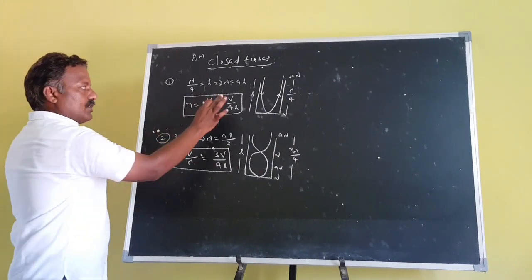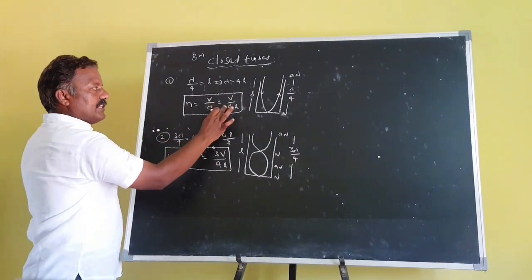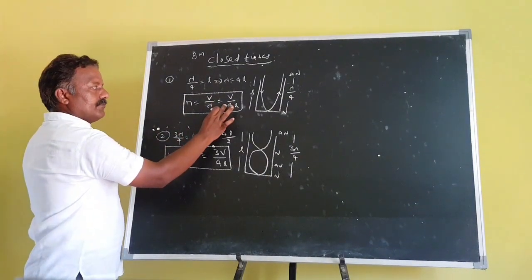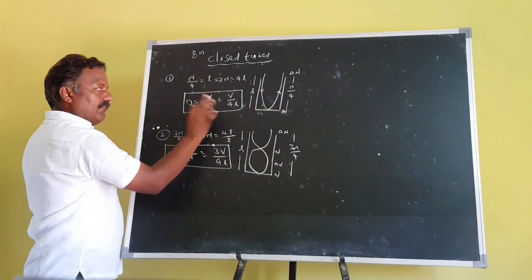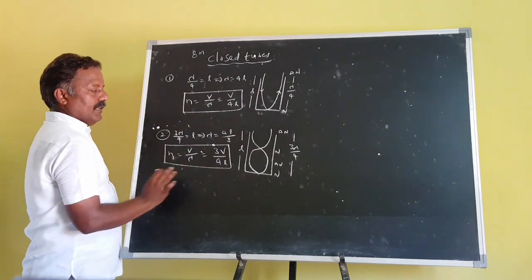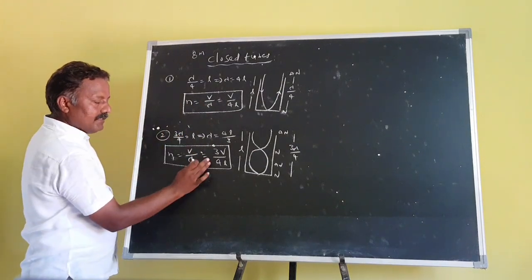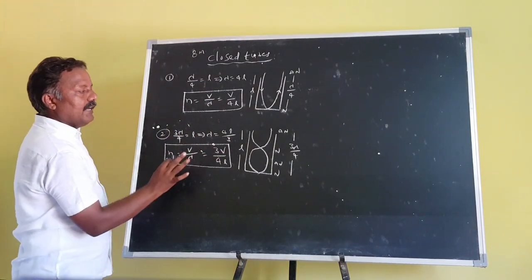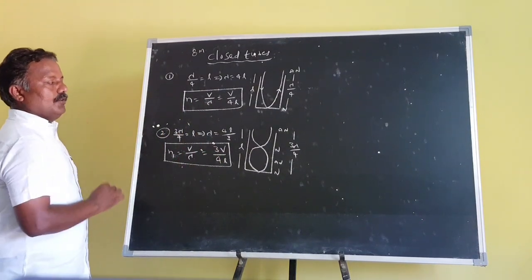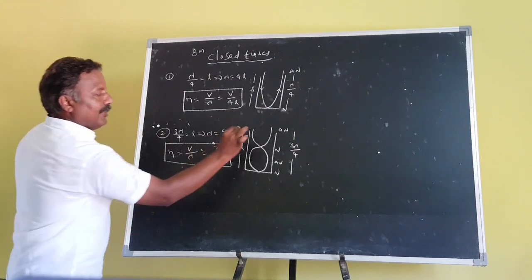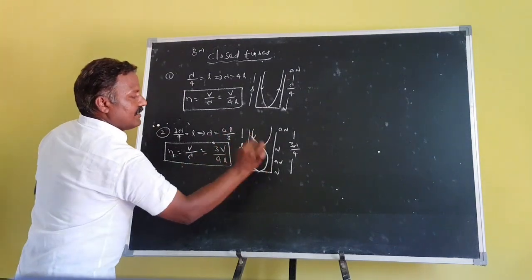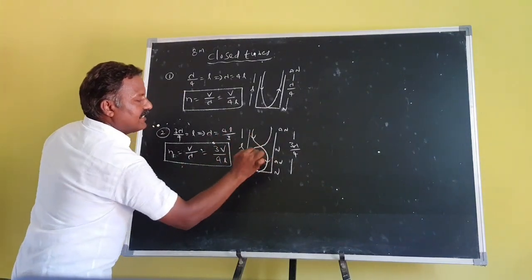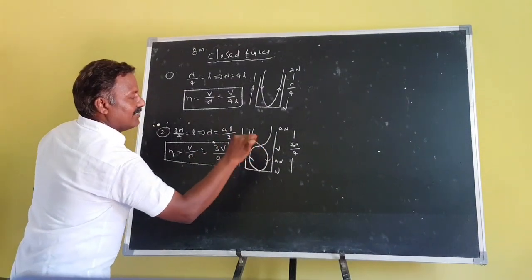The first mode gives the 1st harmonic frequency or fundamental frequency. The second mode gives the 3rd harmonic frequency and the 1st overtone.